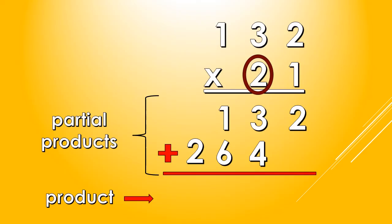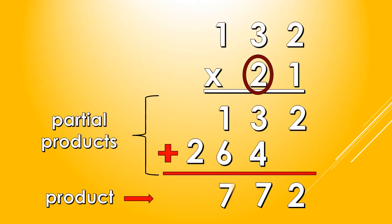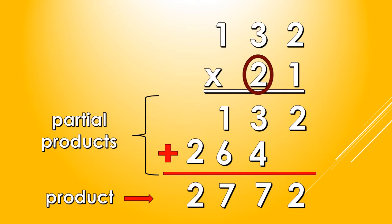So, we add 2 to nothing and we get 2. We add 3 to 4 and we get 7. We add 1 to 6 and we get 7. Again, we add 2 to nothing, so we have 2. So, our final answer is 2,772.